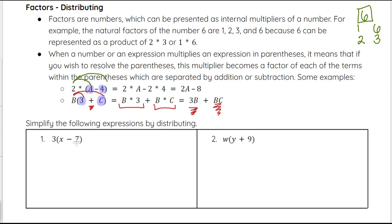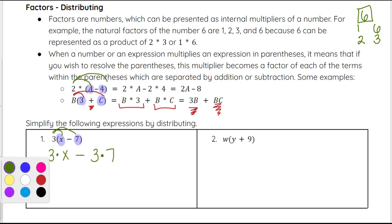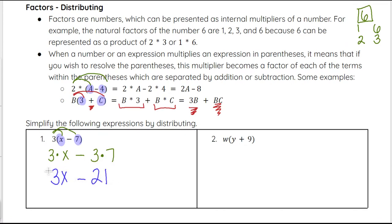Now let's try these two examples. We have 3 times (x minus 7). x is a term and 7 is a term, separated by subtraction. So we multiply 3 by each: 3 times x minus 3 times 7. 3 times x is 3x, and 3 times 7 is 21. So 3x minus 21 is our simplified version once we have distributed.